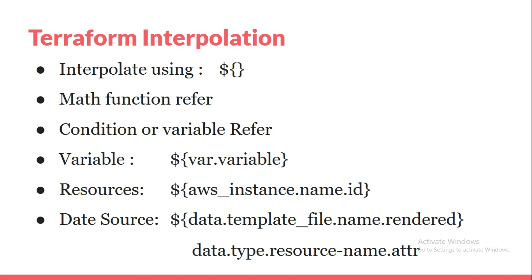Terraform interpolation basically uses the dollar sign and bracket sign for running the interpolation configuration. We can use Terraform interpolation for math functions, resource references, conditionals, or variable references. To reference a variable, the syntax is dollar-bracket var dot variable_name. For a resource, it's the resource type, resource name, and the attribute — for example, aws_instance, the name you give the resource, and the attribute ID. For a data source it's similar — data, template file name, and the attribute.